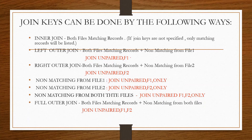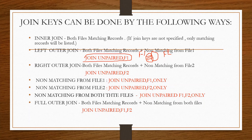Left outer join syntax is JOIN UNPAIRED,F1. Here's a simple diagram: this is file one, this is file two. The output contains the common data from file one and file two, plus exclusively file one data. Unpaired records from file two will not appear in the output file.